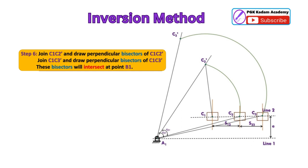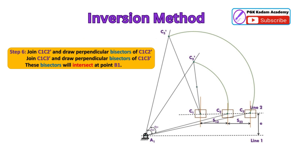Next step 6: Join C1 C2 dash and draw perpendicular bisectors of C1 C2 dash. Similarly, join C1 C3 dash and draw perpendicular bisectors of C1 C3 dash. These bisectors will intersect at point B1.